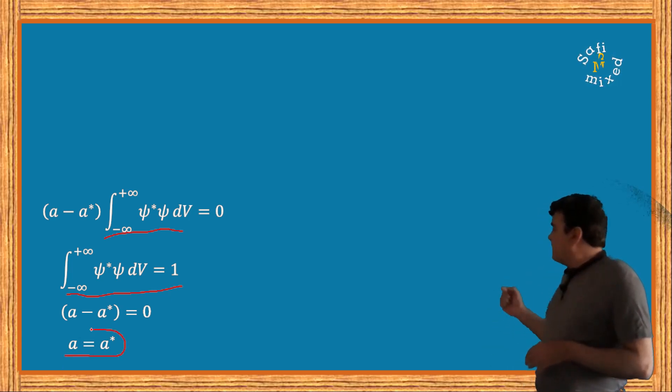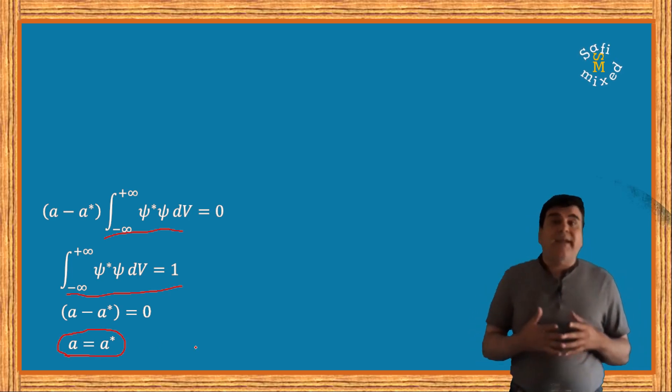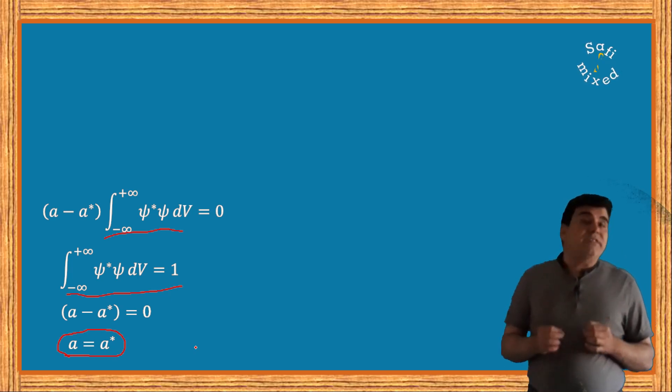Since a real quantity only satisfies this condition, therefore this proves that the eigenvalues of Hermitian operators are always real.